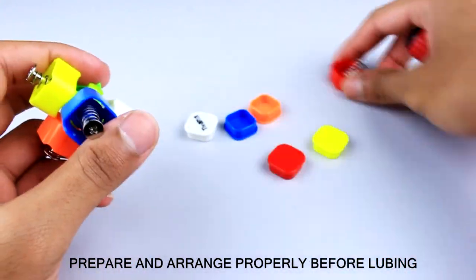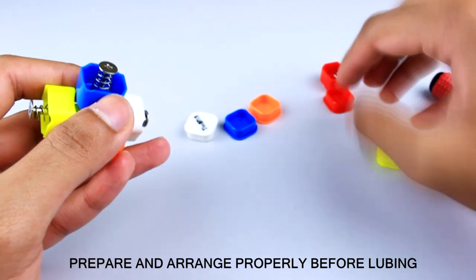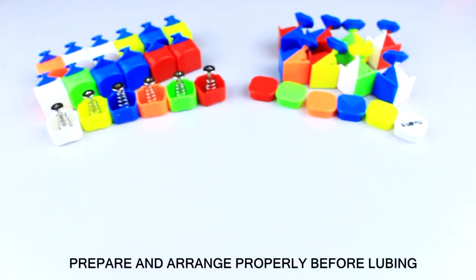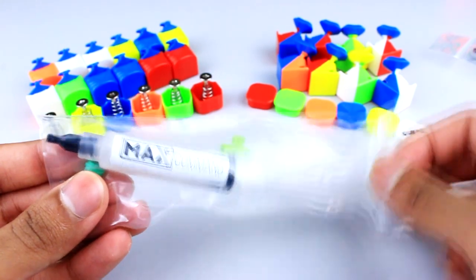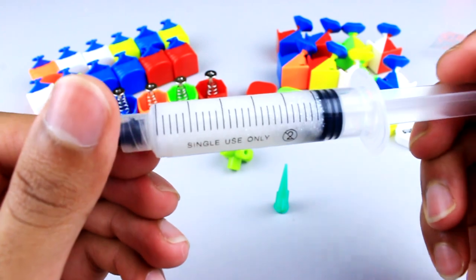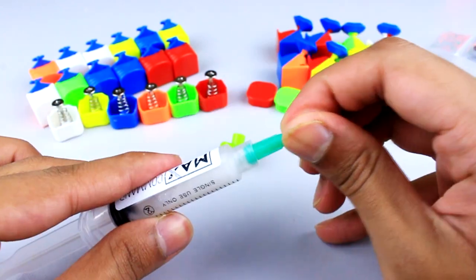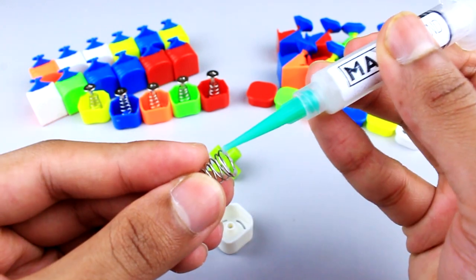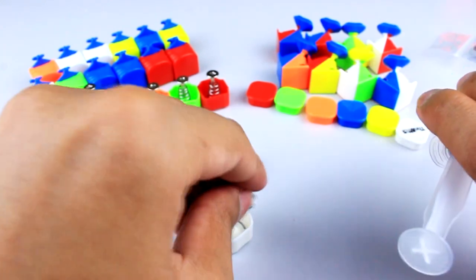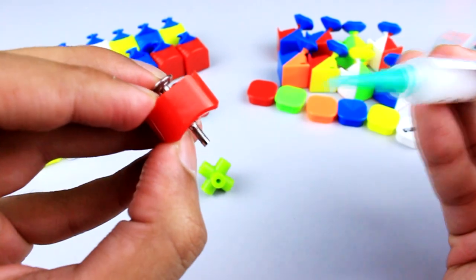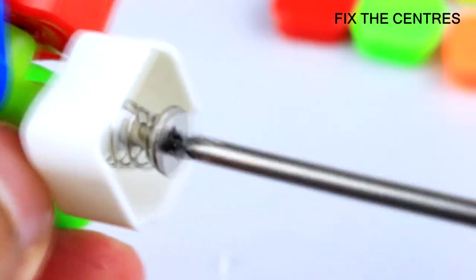Every time you lube a cube, we start by lubing the core, then the center pieces, and finally the corner and edge pieces. Here we have the Max Common. It has a white and glittery appearance, not sure if it's intentionally made. We'll fix the tip on the syringe and apply a small amount underneath the head of the screw and then the center pieces. Please note to apply a small amount first so that you won't over-lube your cube.